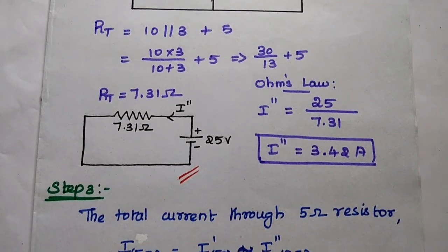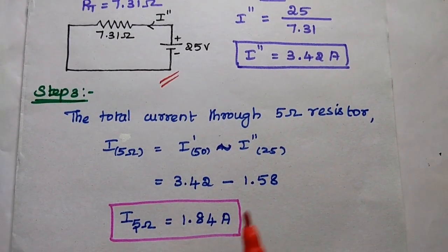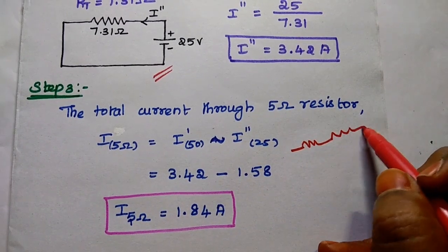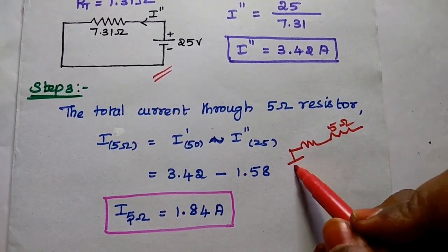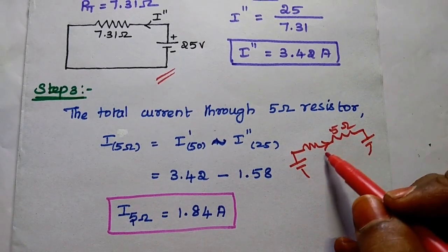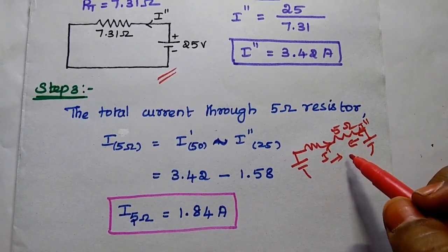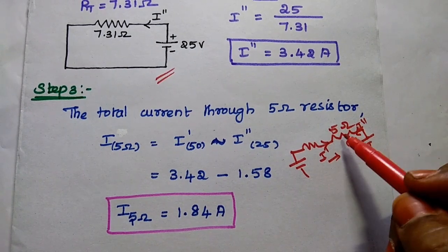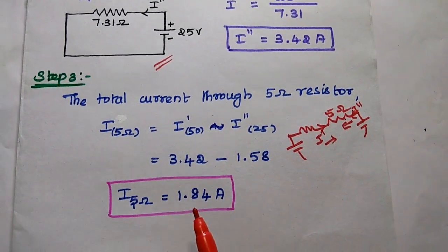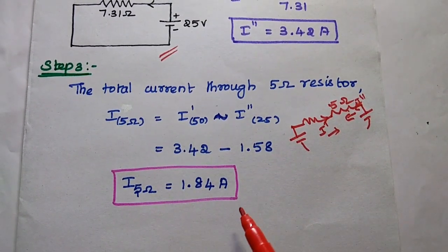In the last step we are going to find out the total current flowing through the 5 ohm resistor due to 50 volt and 25 volt. Here in this circuit, one current is from the 50 volt and another current is from the 25 volt. I dash is in one direction and I double dash is in the opposite direction. So the total current through this 5 ohm resistor is the difference between I dash and I double dash: 3.42 minus 1.58 equals 1.84 ampere.